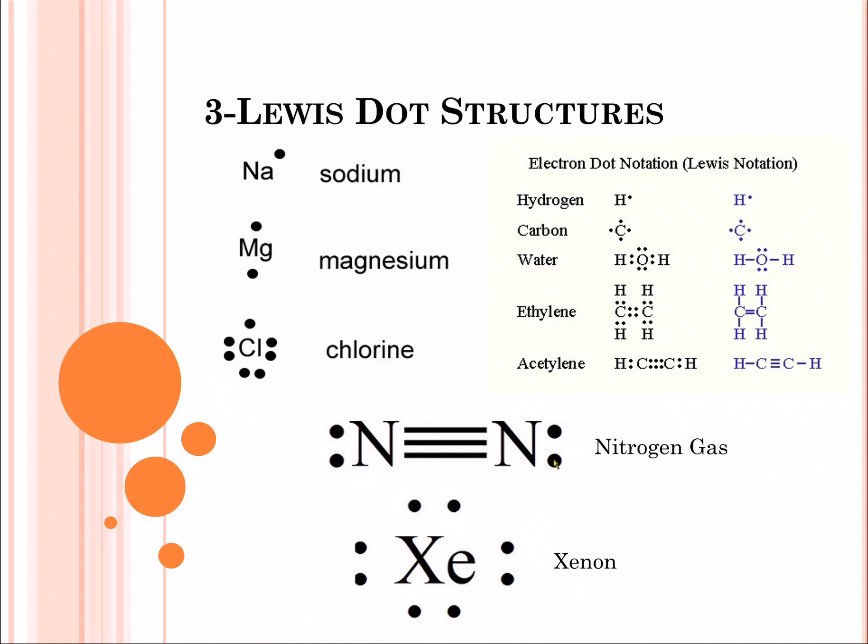In this lesson we're going to focus on Lewis dot structures. This is going to take our understanding of Bohr diagrams a little bit further. Specifically, Lewis dot structures focus on the outer orbital and what's going on with the electrons out there.